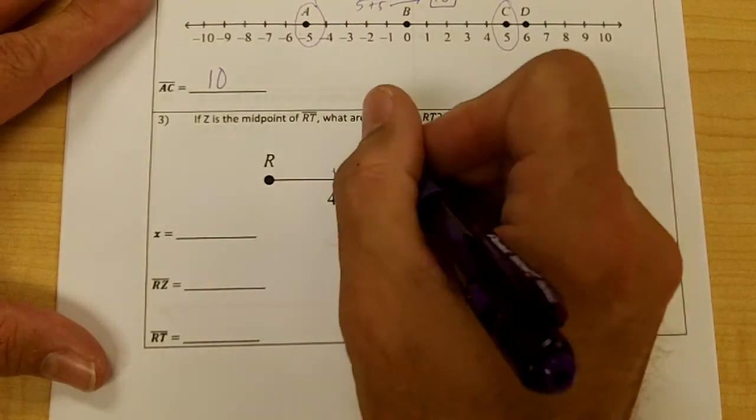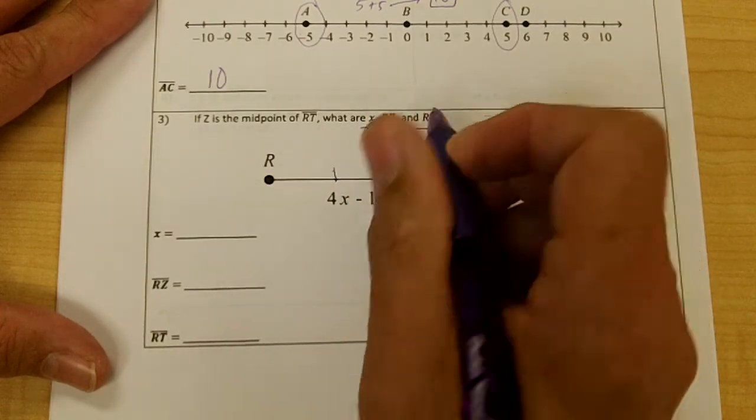What are x, rz, and rt? So we need to find the value of x, we need to find rz, and we need to find rt.